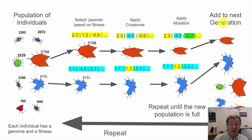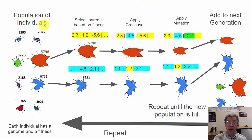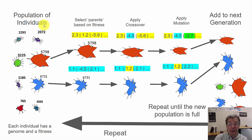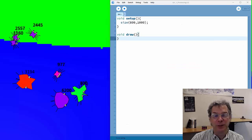The evolutionary algorithm itself is fairly straightforward. In terms of code, our population of individuals will simply be an array since we have a fixed-size population. The individuals are represented as objects, so I'll create an individual class. Those objects will have their DNA and fitness associated with them. I'm going to program this in Java using the Processing environment.